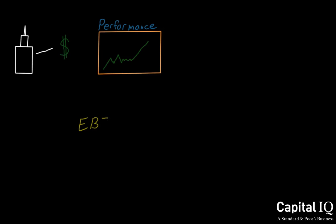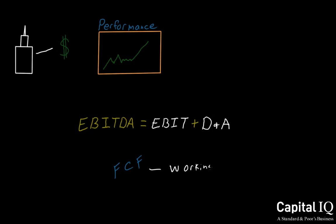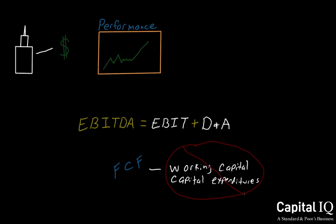Simply put, EBITDA is earnings before interest, taxes, depreciation, and amortization. EBITDA can be used as a proxy for free cash flow, though they should not be confused, as EBITDA does not take into account changes in working capital or capital expenditures. In addition, EBITDA is often normalized for non-recurring and one-time items, thus ensuring standardization across companies.